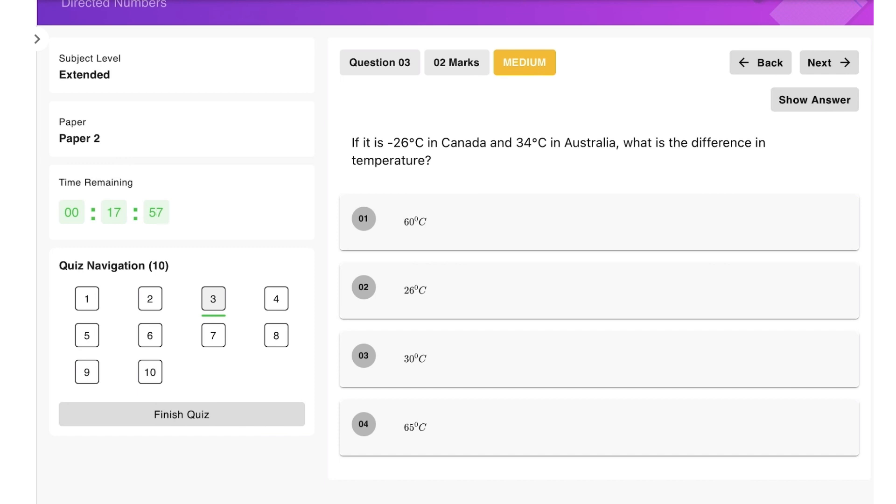We start with this one. If it's negative 26 degrees in Canada and 34 degrees in Australia, what is the difference in temperature? Basically, 34 degrees take away negative 26. When we're subtracting a negative number this becomes positive, so 34 plus 26 equals 60 degrees Celsius. So option one.